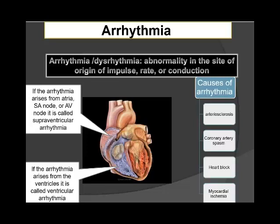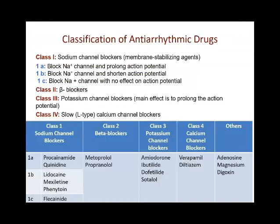Many causes can worsen arrhythmia: arteriosclerosis, coronary artery spasm, heart block, and myocardial ischemia. Anti-arrhythmic drug classes include: Class 1 acting on sodium channels, Class 2 on beta receptors, Class 3 on potassium channels, and Class 4 on slow L-type calcium channels. Classes 2 and 4 were mentioned before, so we will focus on Classes 1 and 3.